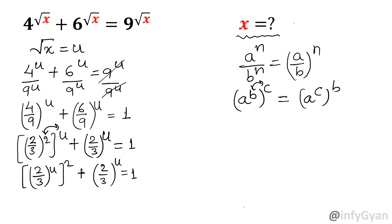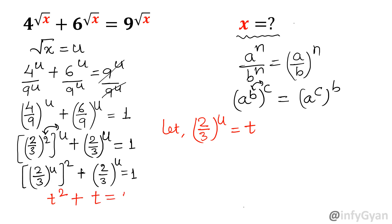Now let us substitute 2 over 3 whole power u equal to t. So the equation will be t squared plus t equal to 1, or t squared plus t minus 1 equal to 0. This is a quadratic equation as the degree is 2. We will solve this by the quadratic formula.